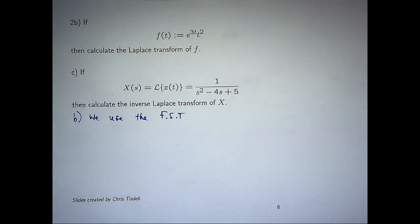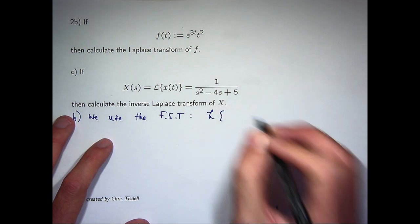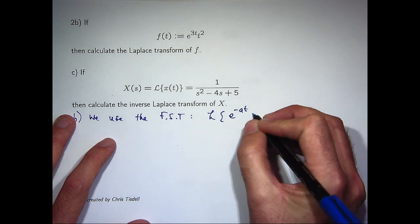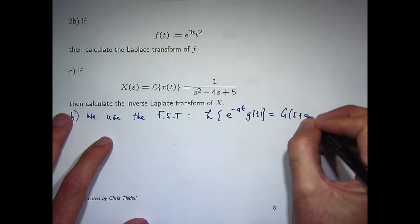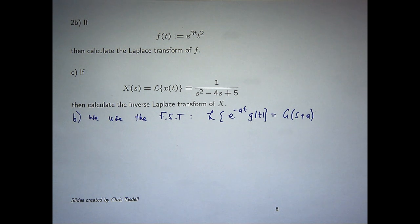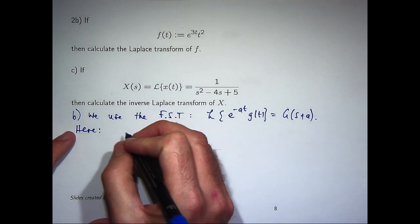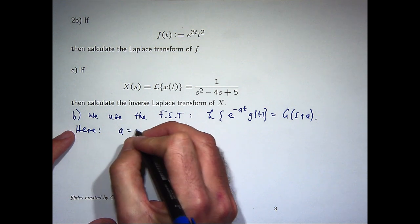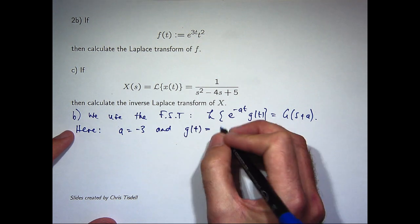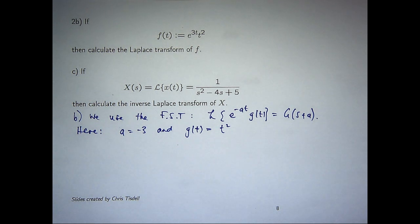We use the first shifting theorem, which I'm going to abbreviate to FST, which is the Laplace transform of e to the minus at times little g of t is just the Laplace transform of little g of t shifted a units. Now remember, it's common convention to represent lowercase letters as, say, your functions of t, and uppercase or capital letters as the transform of those lowercase letters. So, in our example, we have a would be minus 3, and little g of t will be t squared.